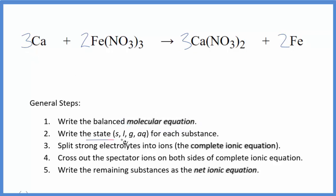Next, we need to write the state for each substance. Calcium, that's a metal. That's a solid metal, so we're going to put S for that. Nitrates are very soluble, AQ. More nitrates here. Calcium nitrate, that's soluble. And then iron by itself, that's going to be a metal. So we have our states.